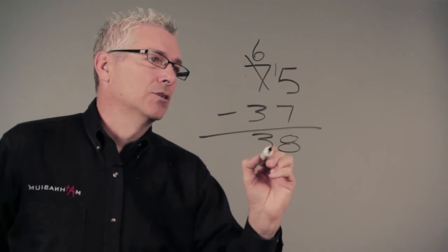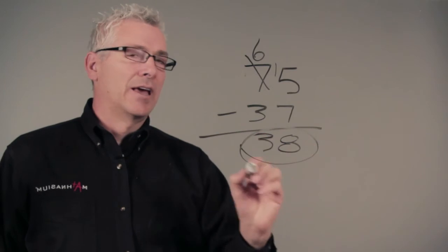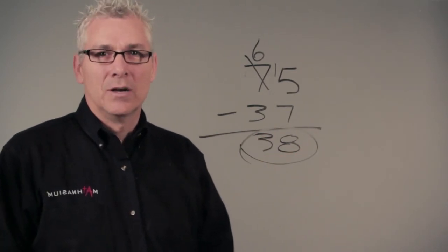So our answer to 75 minus 37, after we've borrowed, is 38. Thanks for watching. This has been Mark Minson with Mathnasium of Draper, Utah.